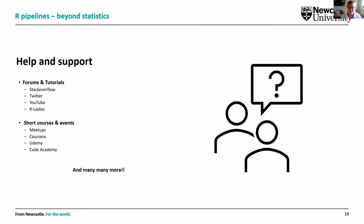That was my quick whistle-stop tour. On where you can get help if you're beginning: there are lots of forums and tutorials available. Places like Stack Overflow, Twitter, YouTube, and R-Ladies are brilliant with really good help and support. The R community is very supportive of one another — if you ever get stuck, there's always somebody on hand to help. There are also short courses and events — places like Meetup have a lot of R groups that give presentations about current work and package development. There's a whole world of R support available to everybody.